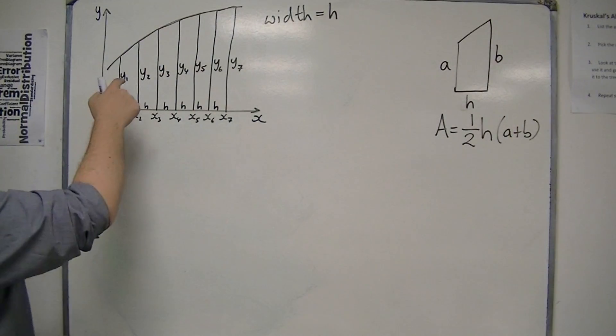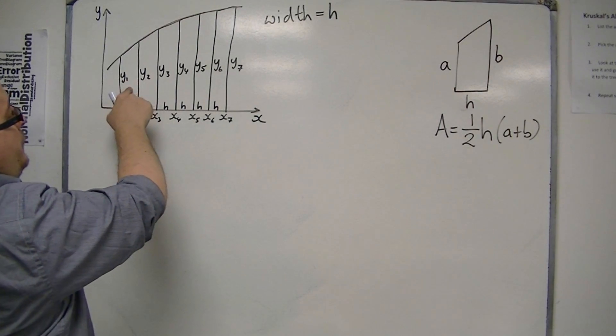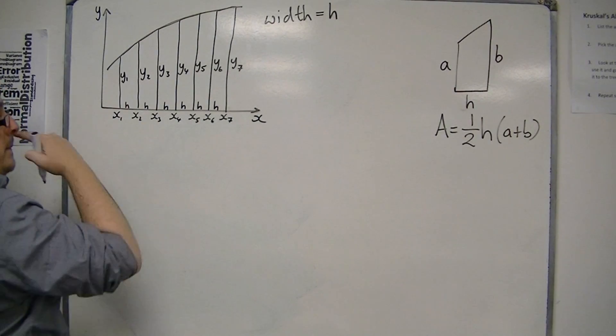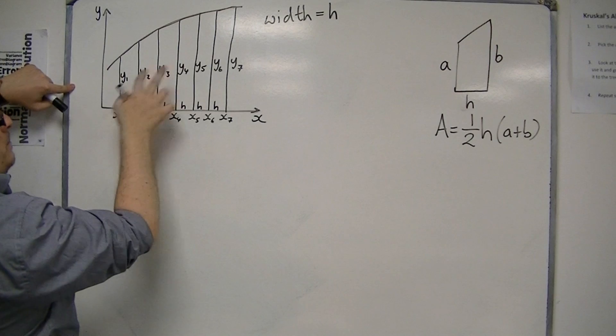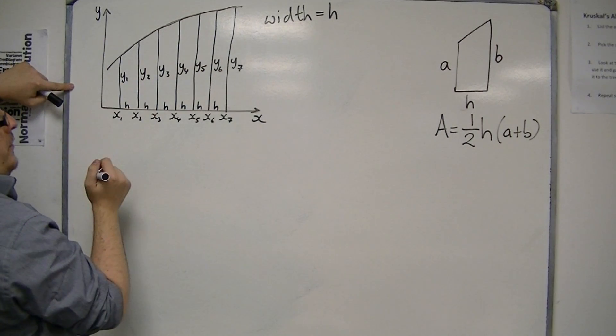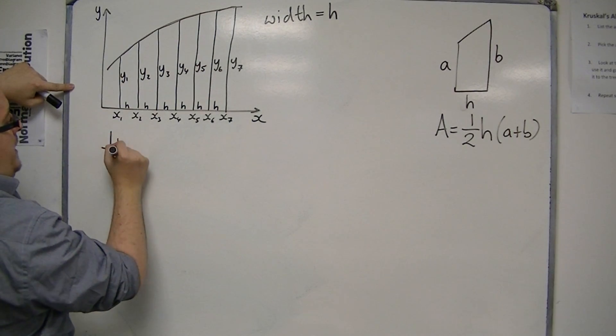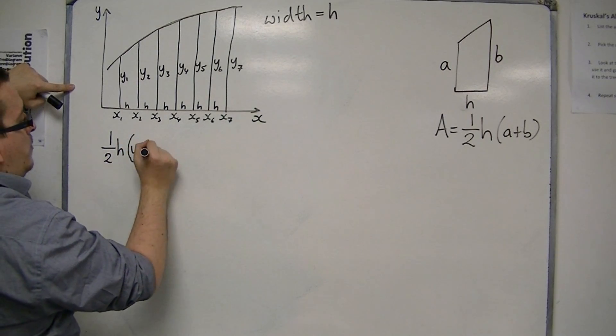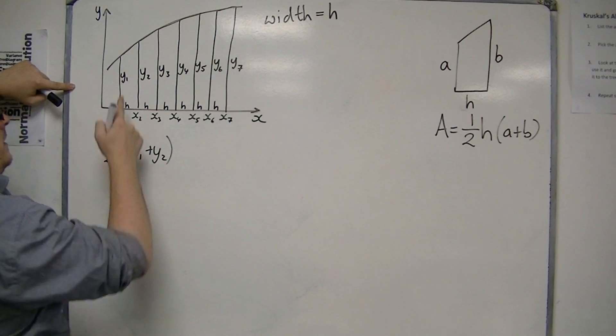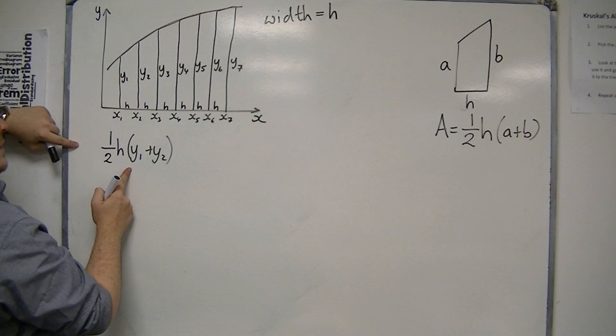So the area of the first trapezium will be, well, the a and the b correspond to y1 and y2. So this is one-half h times y1 plus y2. That's the area of the first trapezium.